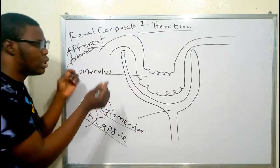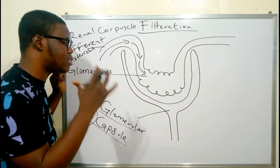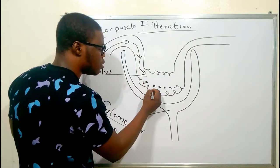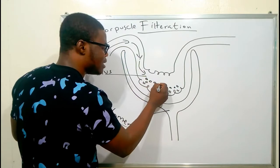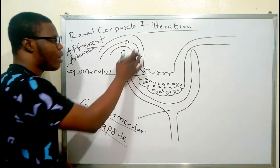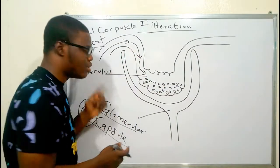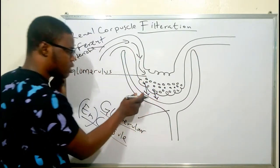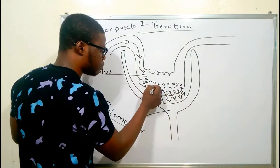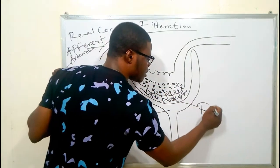When blood reaches the glomerulus, due to the presence of pores, some things are going to be filtered — that is where the word filtration comes in. Some things are going to escape into the glomerular capsule, also called the Bowman capsule. Those constituents that escape are called the filtrate. There are some things that are bigger and won't be able to escape: the blood cells and plasma proteins.